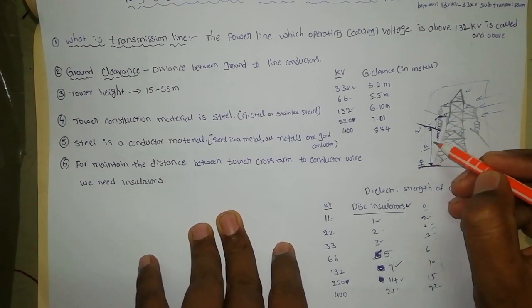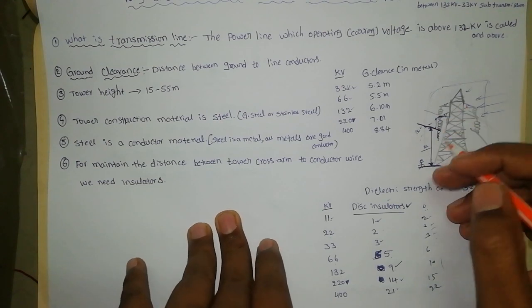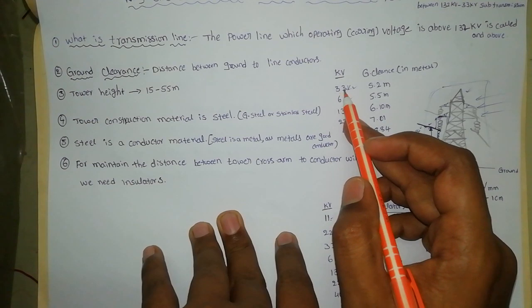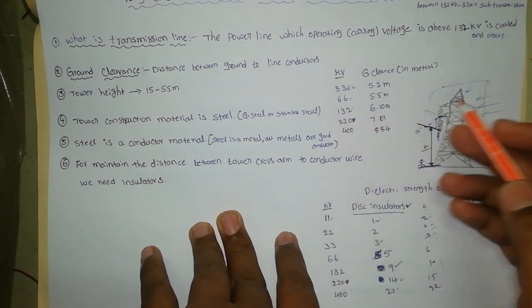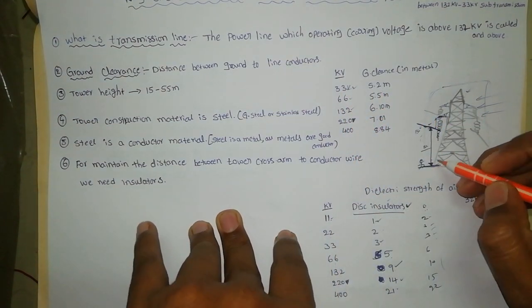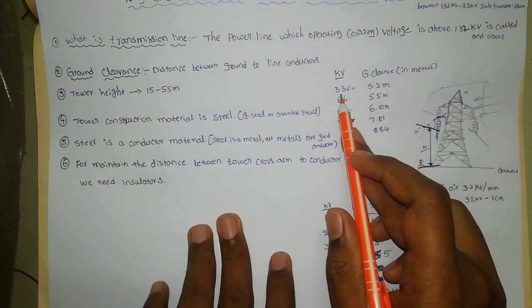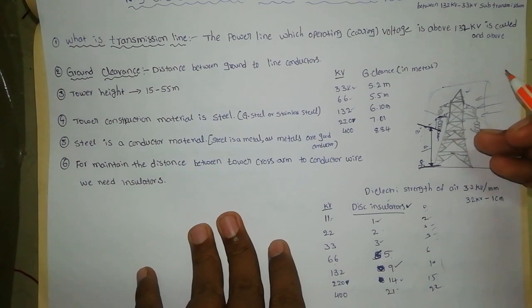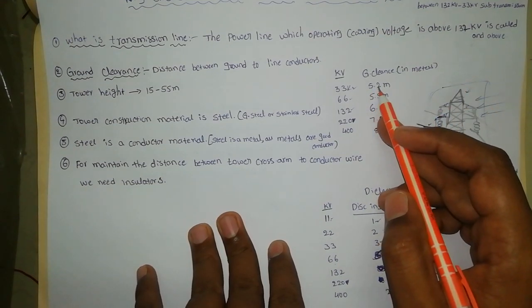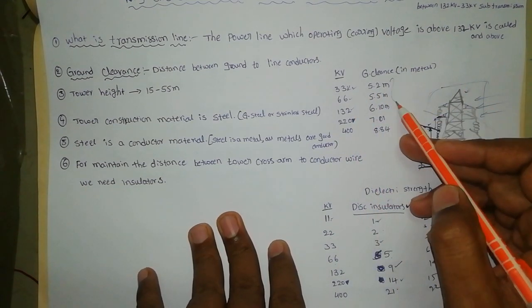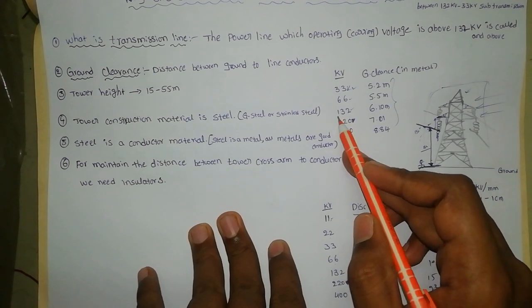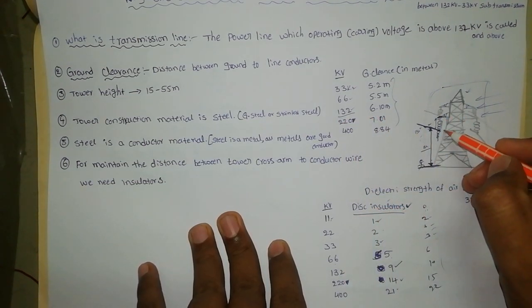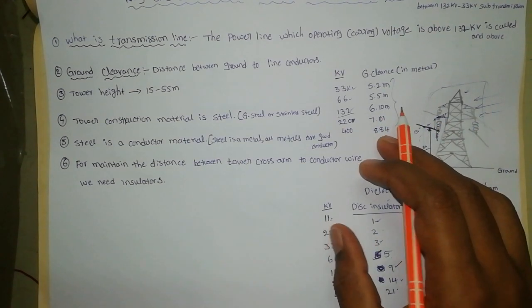The safe distance for 33 kV is 5.2 meters height. If your operating voltage is 33 kV, the ground clearance must be above 5.2 meters. If the operating voltage is 132 kV, the tower height must be above 6.10 meters.